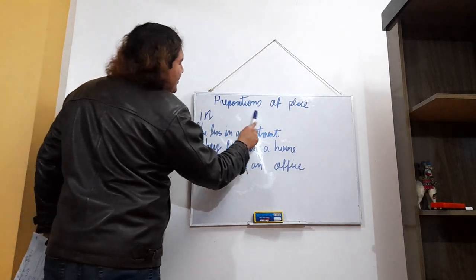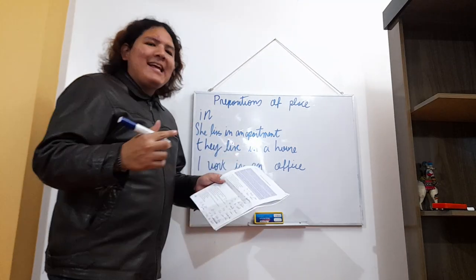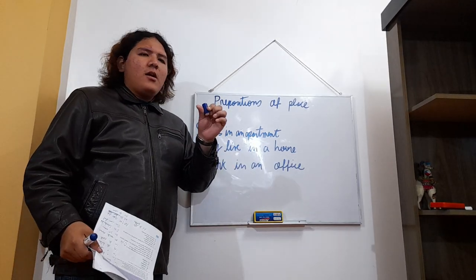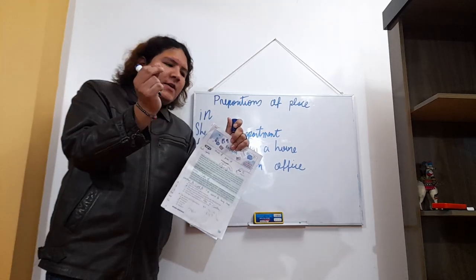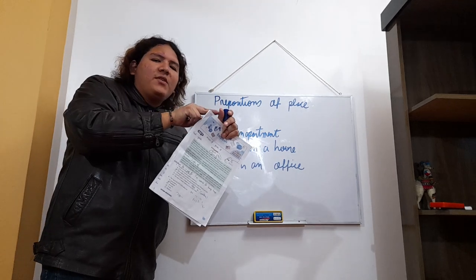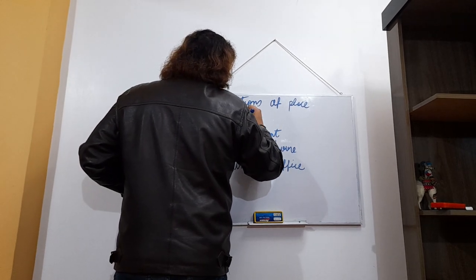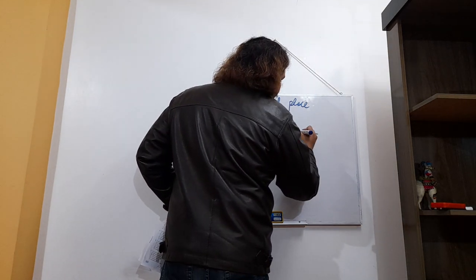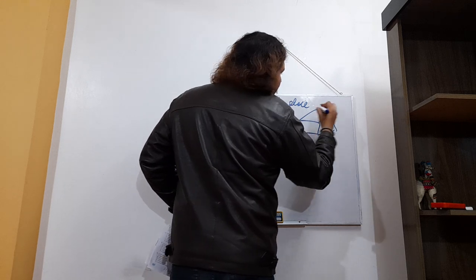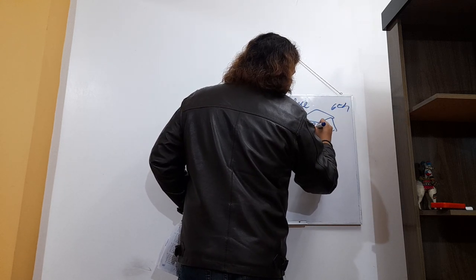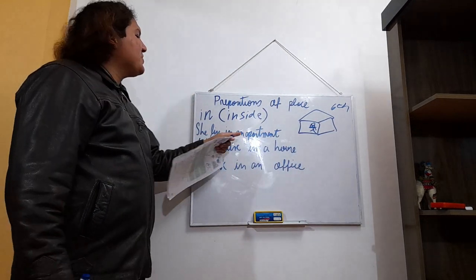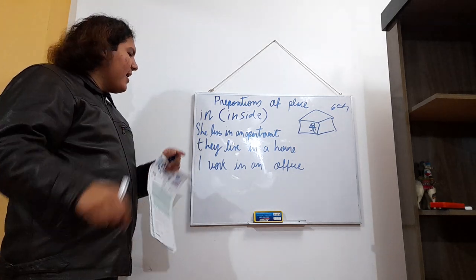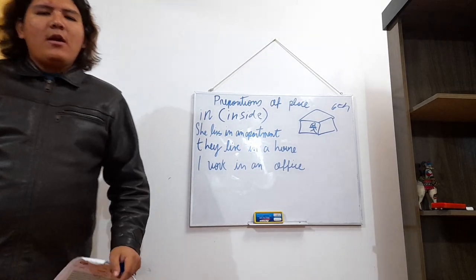Now we look at prepositions of place. 'In' is used to refer to when you are inside something. For example: 'She lives in an apartment' — she is inside the apartment. 'They live in a house.' 'I work in an office.' The preposition 'in' refers to being inside a space or enclosed location.